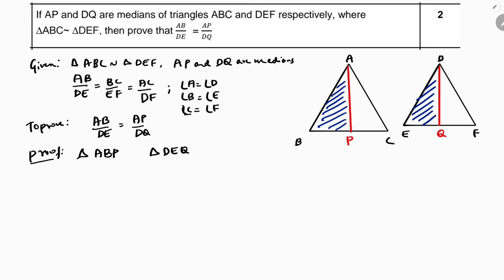So to prove this, first I will take what is given. Given is here, AB by DE equals BC by EF. So here, AB by DE, BC I can write as 2BP. And because AP is a median, so these two sides are equal.